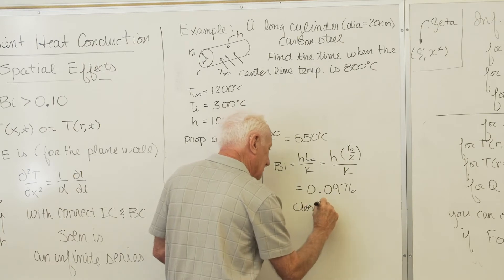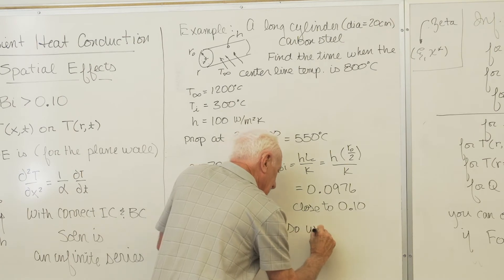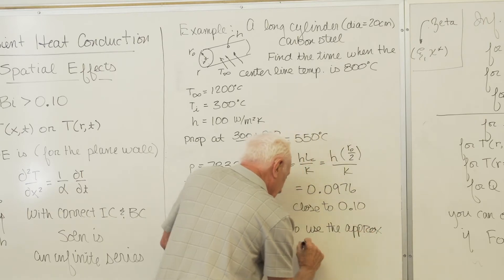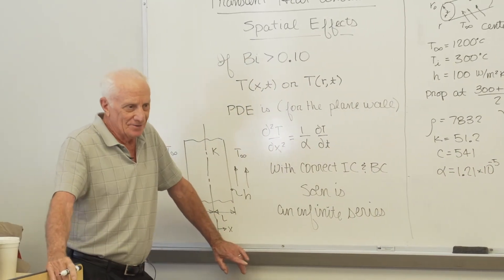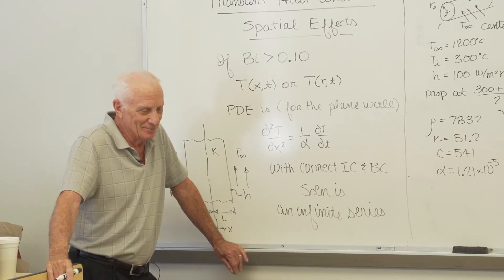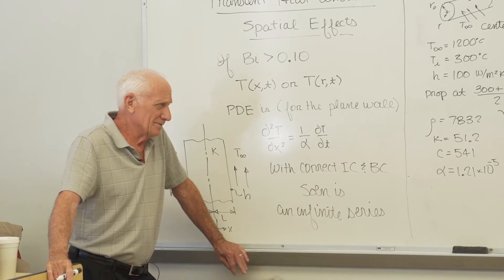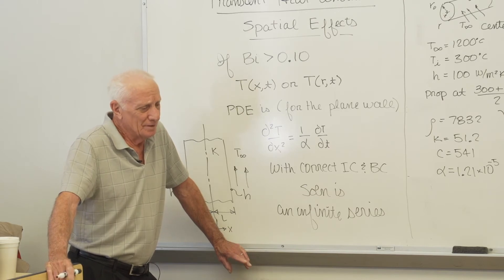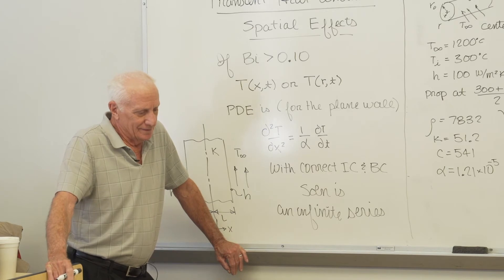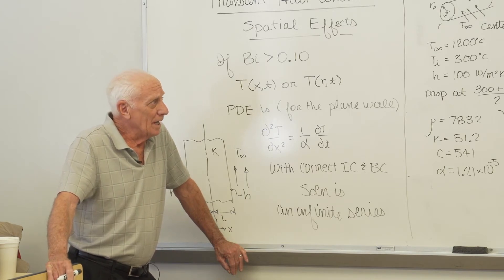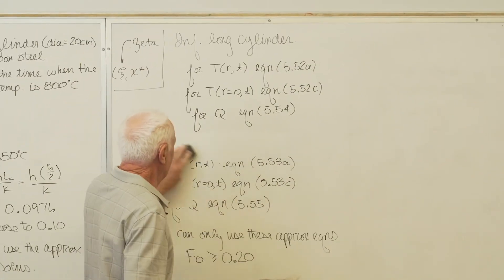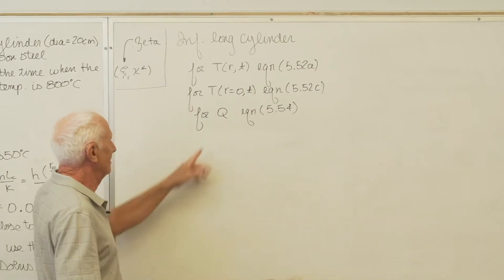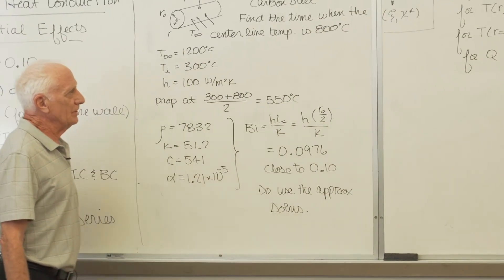The Biot number is really close to 0.1. Legally I could use lumped heat capacity, but since we're so close to 0.1, I'll go ahead and use the approximate solution. I'm given the centerline temperature, so I use equation 5.52C for the infinite cylinder: theta-naught-star equals (T at R=0 minus T-infinity) divided by (T-initial minus T-infinity) equals C1 times exp(−ζ₁² × Fo).